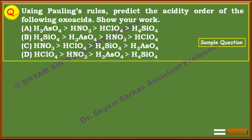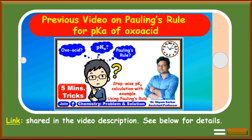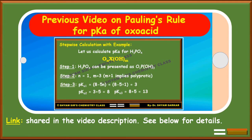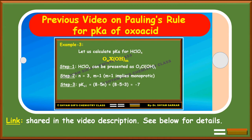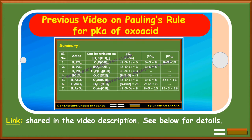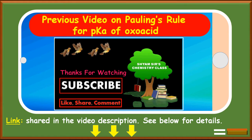This kind of problem can easily be solved with the help of Pauling's rule. If you spend five minutes on my previous video related to Pauling's rule for the pKa of oxoacids, you will get stepwise calculation of pKa with different examples. The link is in the video description. You will learn how to calculate pKa1 and pKa2 for different oxoacids and get the relative acid strength for monoprotic as well as polyprotic acids.